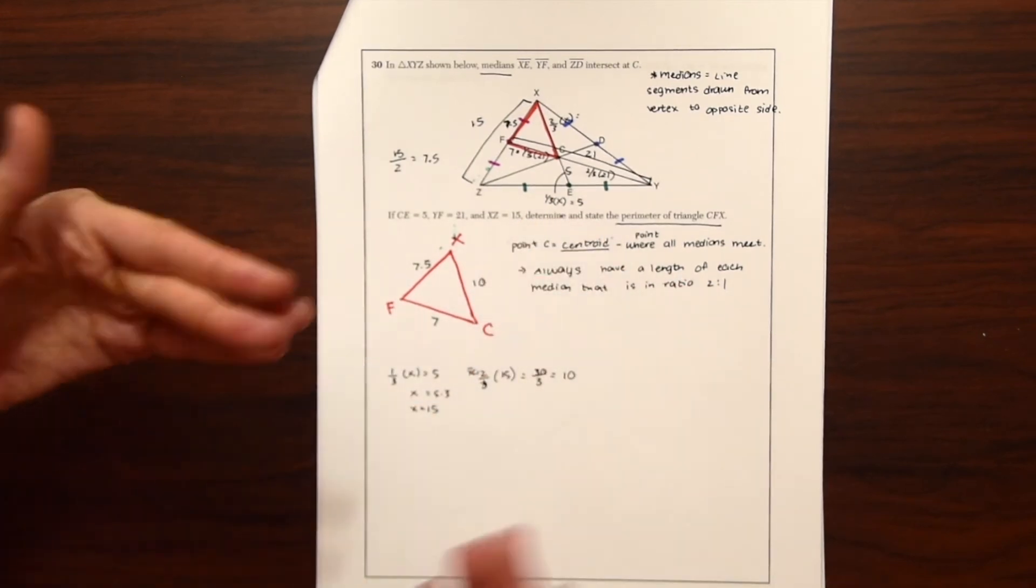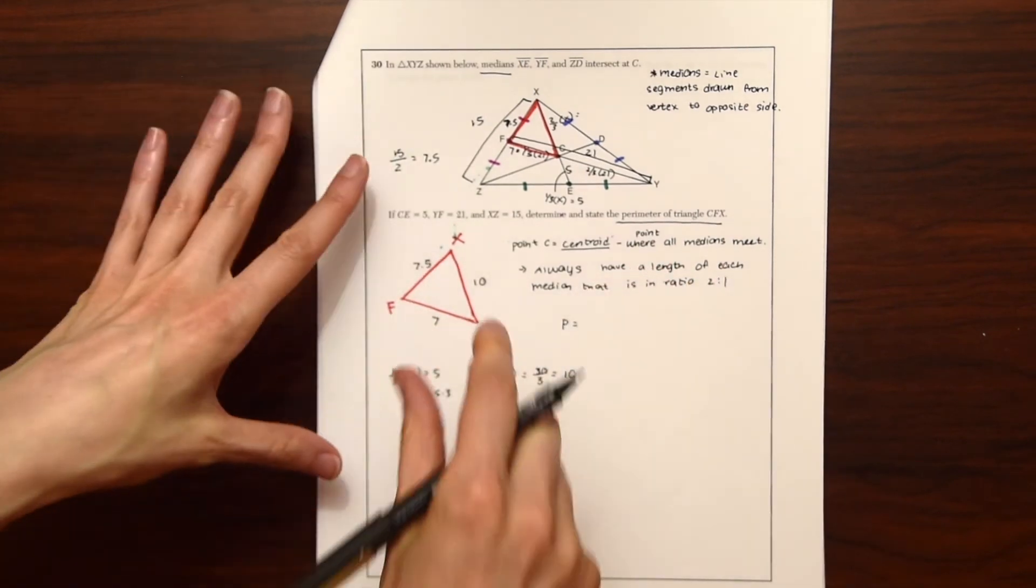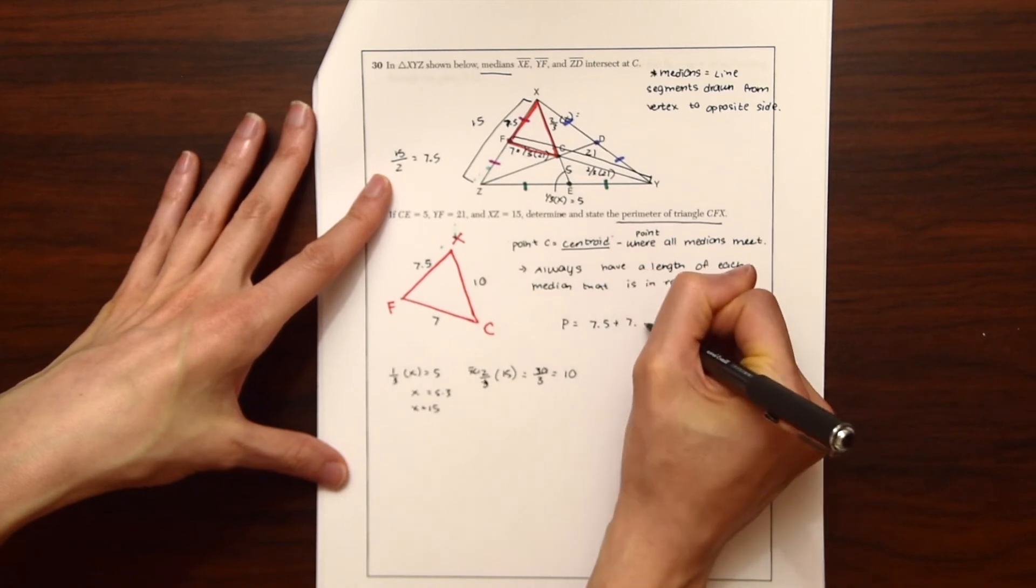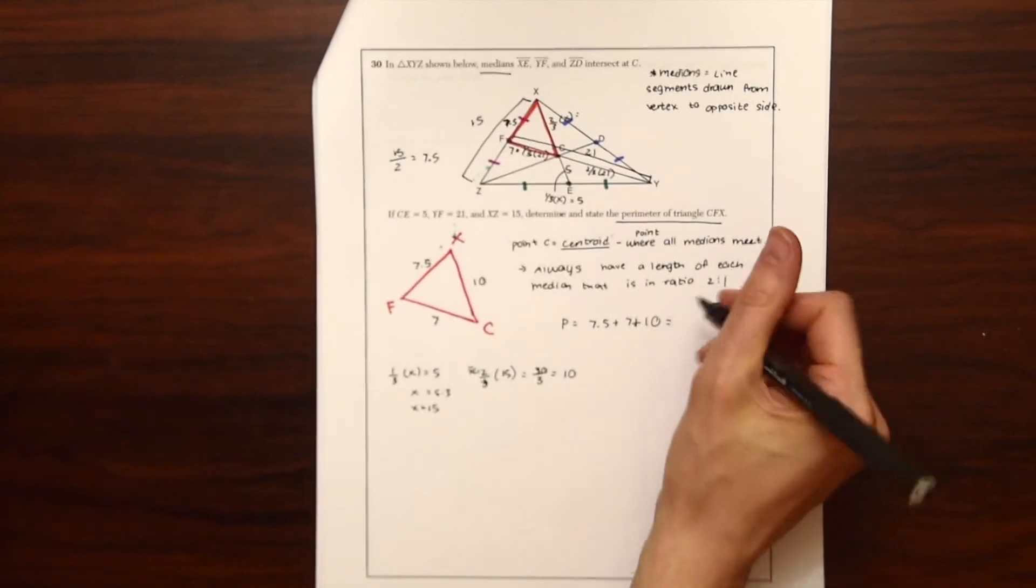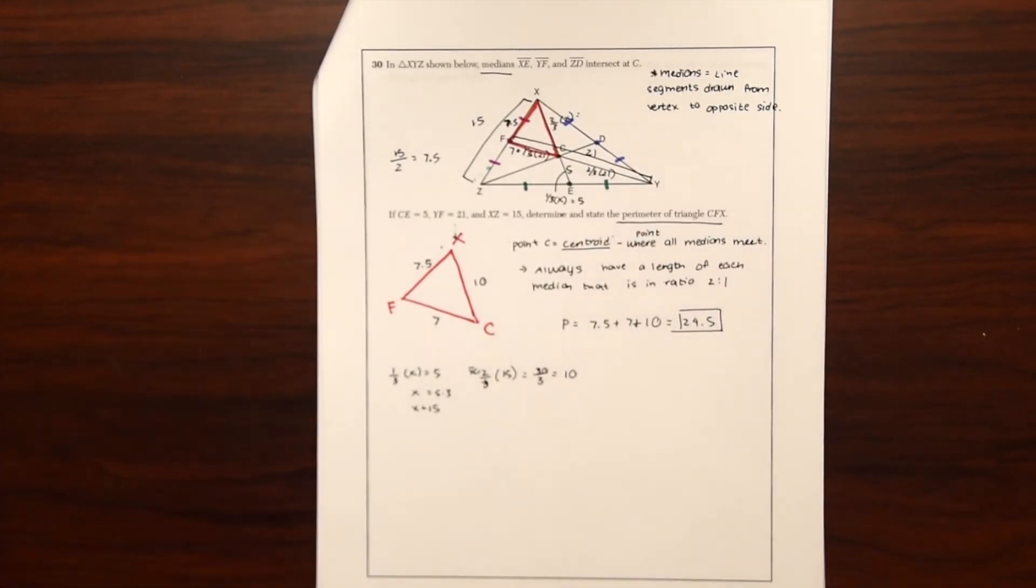And now we can actually answer this question and find the perimeter of our triangle. Remember the perimeter is when you add up all the sides together. So we're just going to add 7.5 plus seven plus 10. And when we do that, we get 24.5. And that's our answer.